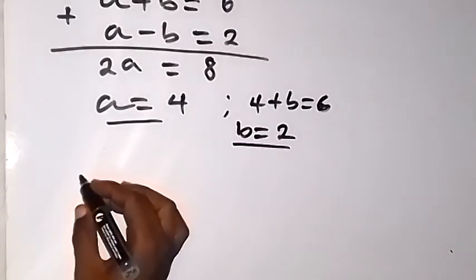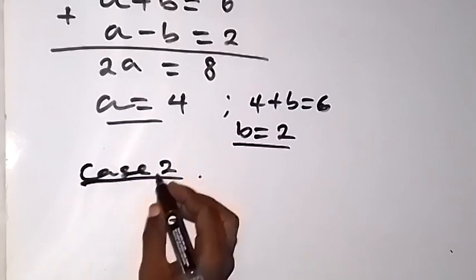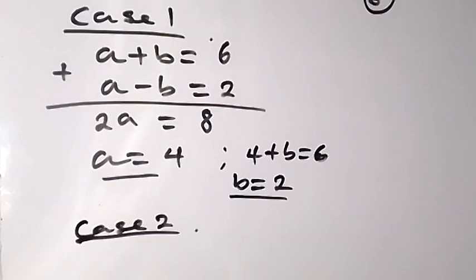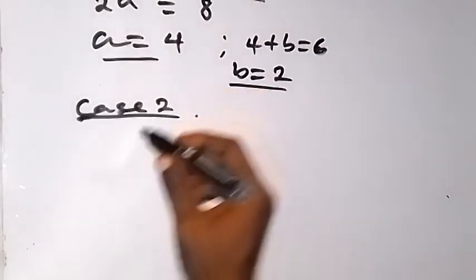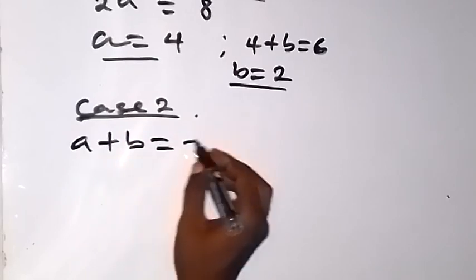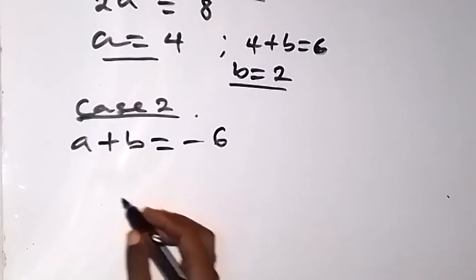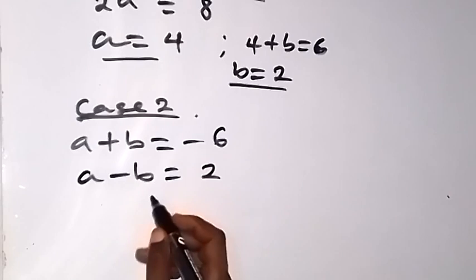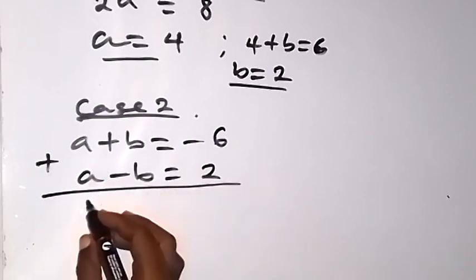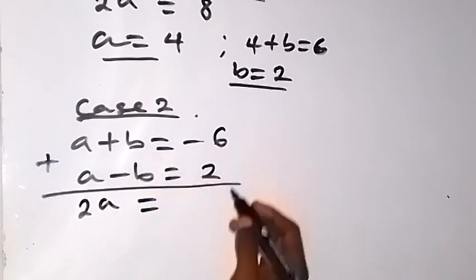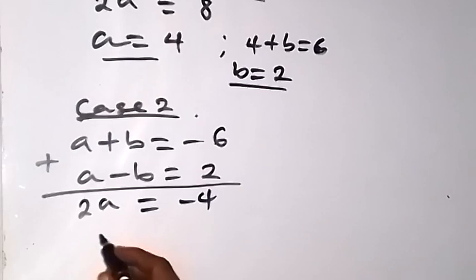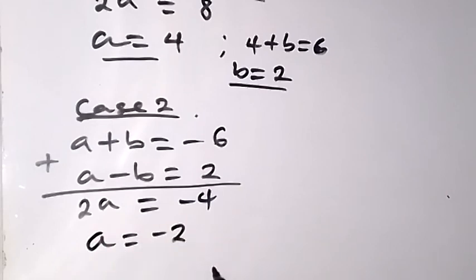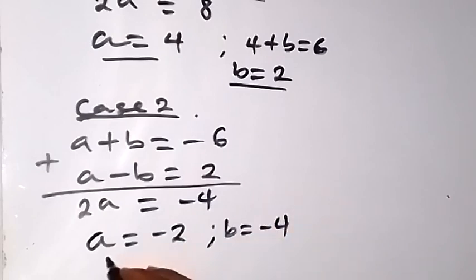Then when we consider case 2, when we have a plus b equals to minus 6. We use this together with equation 1, a minus b equals to 2. When we add, we have 2a, b is eliminated, and minus 6 plus 2 is minus 4. Dividing both sides by 2, a equals minus 2. Substituting minus 2 to get b: b equals minus 4. So this is another set of solutions.